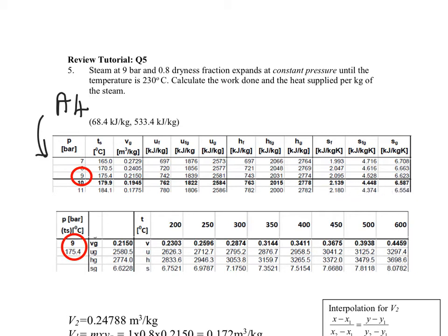So the reason we do this is we want to pinpoint the start: 9 bar, 0.8 dryness, and we are told the steam moves at constant pressure. So this is an isobaric process, and this process takes our steam to a temperature of 230 degrees.